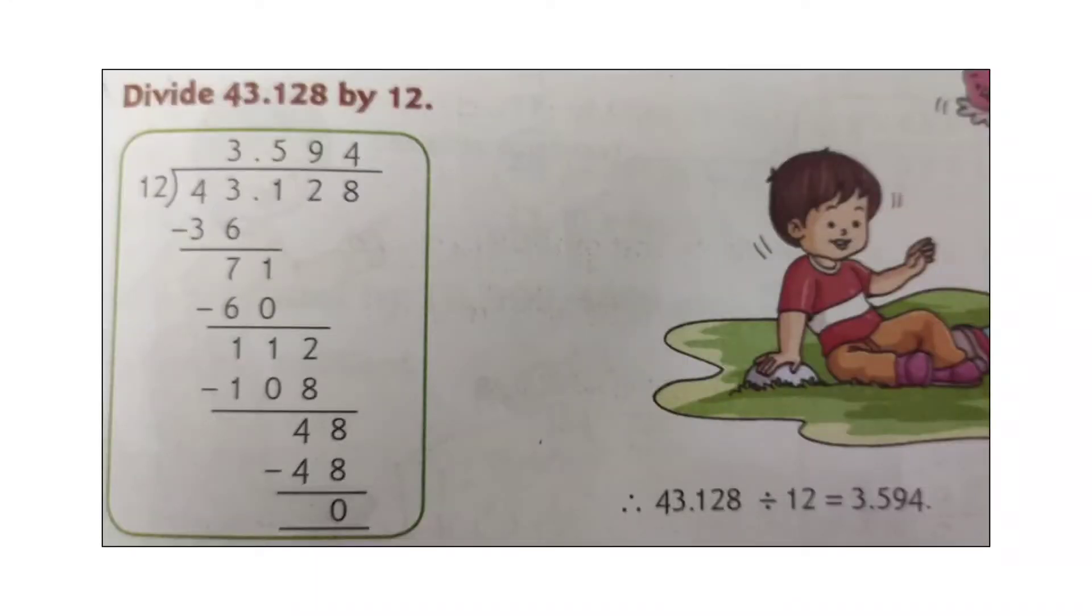Look at another sum. Divide 43.128 by 12. 12 threes are 36. 43 minus 36 is 7. Bring down 1. 12 fives are 60. 71 minus 60 is 11. Bring down 2. 12 nines are 108.